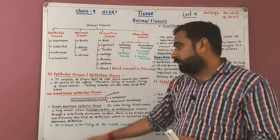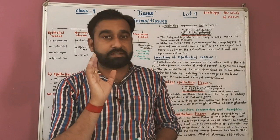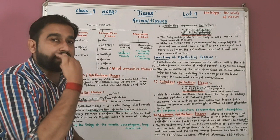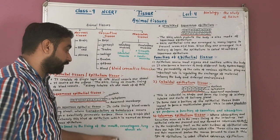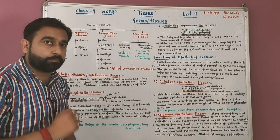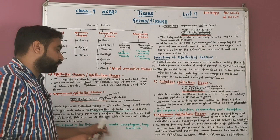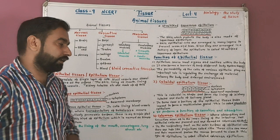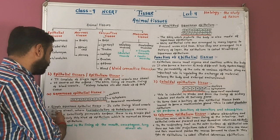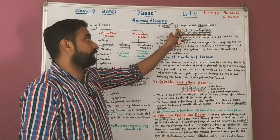Simple squamous epithelial tissue is found in the lining of the mouth, esophagus, lungs, alveoli, etc. The buccal cavity lining is made by simple squamous epithelial tissue. The esophagus (food pipe, which opens into the stomach) also has simple squamous tissue lining, through which peristaltic movement moves food into the stomach.